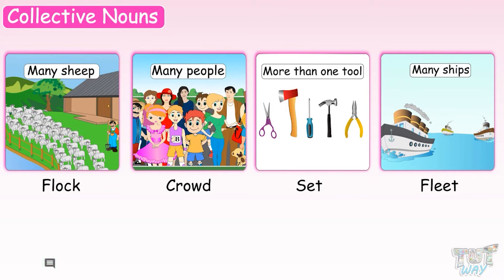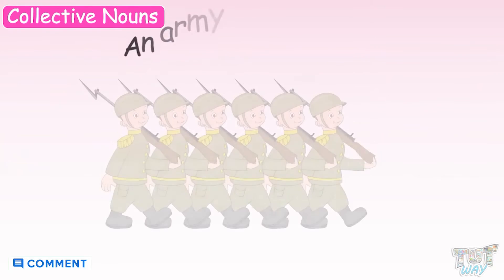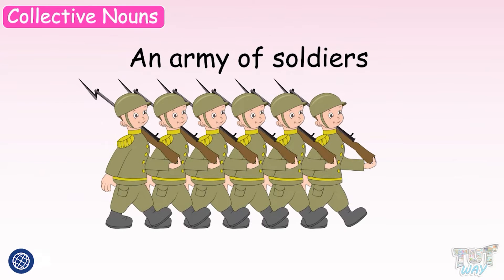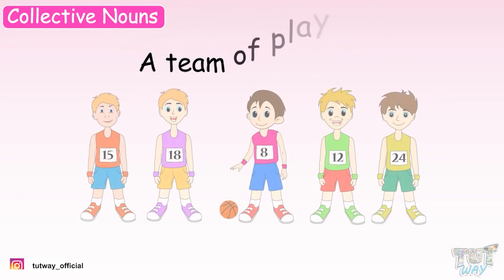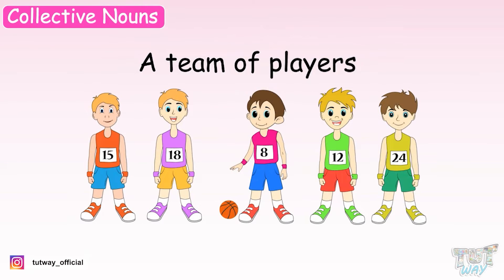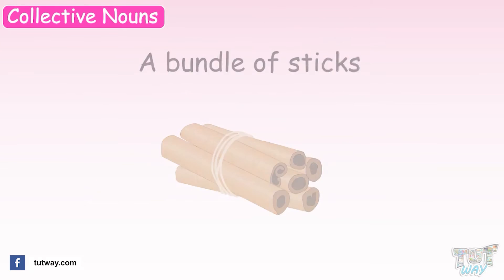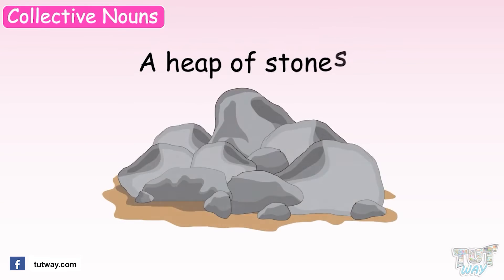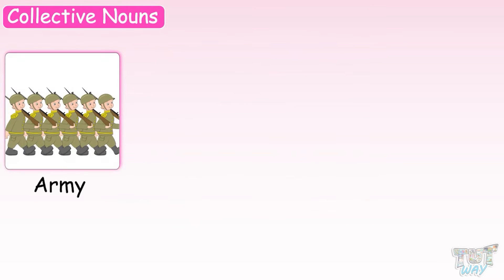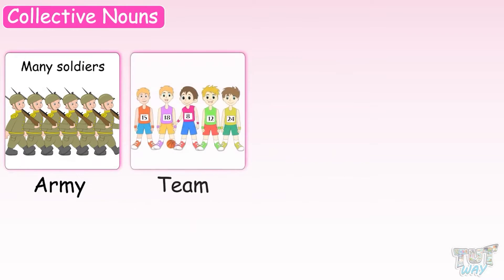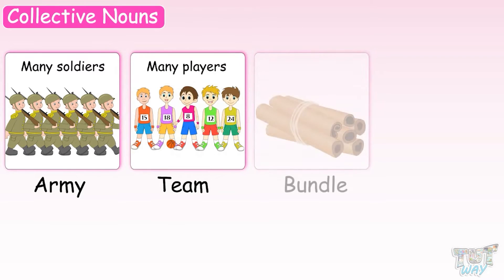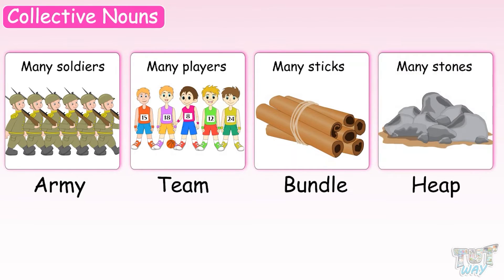Now let's see some more collective nouns. An army of soldiers — when there are many soldiers, we call them an army. A team of players. A bundle of sticks. A heap of stones. So army represents many soldiers, team means many players, bundle means many sticks, and heap means many stones. All these represent a collection of something, so they are called collective nouns.